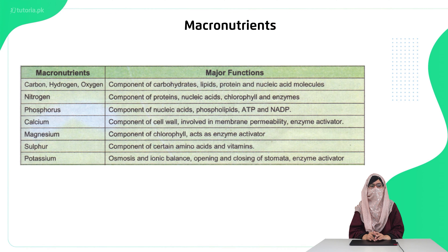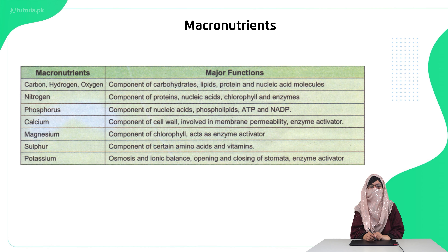The first macronutrients in the table are carbon, hydrogen, and oxygen — these three create carbohydrates, lipids, proteins, and other nucleic acid molecules. Then comes nitrogen, which is involved in proteins, nucleic acids, chlorophyll, and enzyme synthesis. Phosphorus is also important because both nitrogen and phosphorus are required to create DNA, RNA, and other molecules, so they are both required in large quantities.